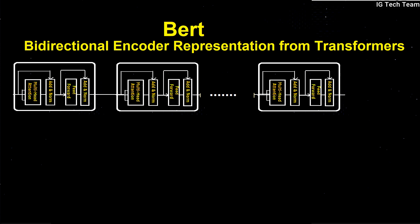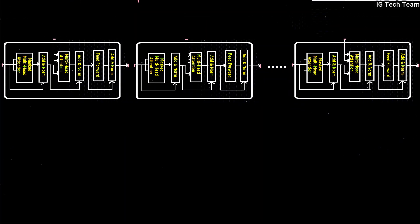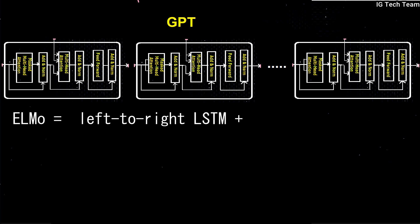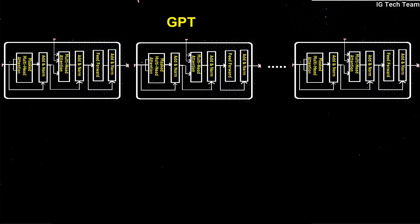Before BERT, we had GPT (Generative Pre-trained Transformer), ELMo (Embeddings from Language Model), and others. If we stack Transformer decoders, we get GPT. In GPT, information flows only from left to right. Whereas ELMo was bi-directional, it concatenated left-to-right and right-to-left LSTMs. So ELMo was not truly bi-directional — it was called shallowly bi-directional because information doesn't flow in both directions at the same time.